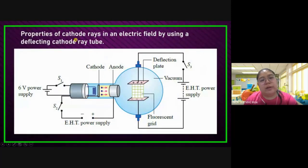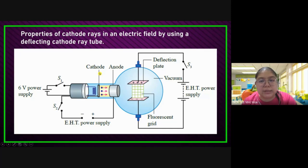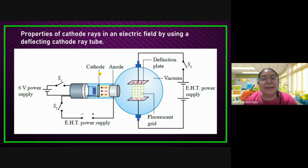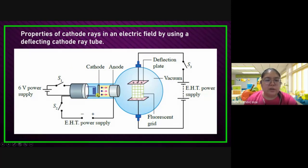Now you can see the properties of the cathode ray in the electric field, using the deflecting cathode ray tube. We want to check — is the electron charged or not? Using the six volt and then the EHT, so the electron can be moved. When it comes off the cathode, it goes through the deflection plates — up and down, which is the Y plate.